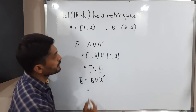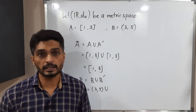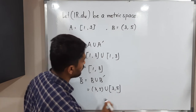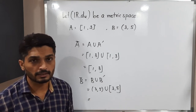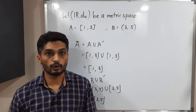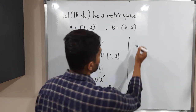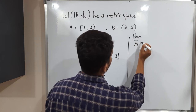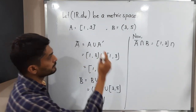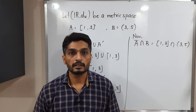B-bar means B union B-dash. B is the open interval (3, 5). The set of limit points includes all interior elements and the boundary points 3 and 5 which are also limit points. So B-dash includes 3 and 5, making B-bar equal to the closed interval [3, 5]. Since the open set is a subset of the closed set, their union is the closed interval [3, 5]. Now let us check whether A and B are separated, i.e., whether A-bar intersection B equals phi and A intersection B-bar equals phi.